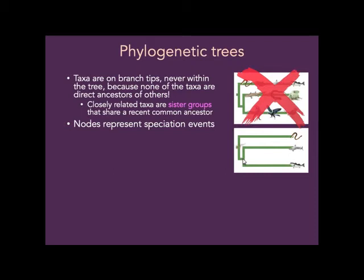This node here represents a population of individuals. We think the population that represents the ancestor of the lampreys and the other fish looked like some kind of weird jawless thing. That no longer exists. And we think the ancestor of the sharks and the fish may look like another early form, but it no longer exists either.